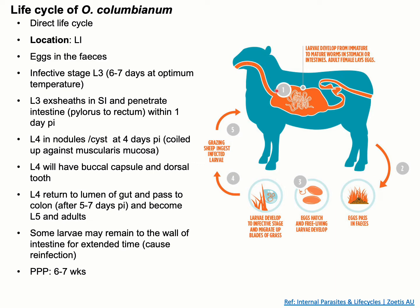When the ingested grass reaches the small intestine, the L3 larvae exsheath and penetrate the wall of the intestine. They migrate within the intestinal wall, and as a result there is an inflammatory response, which finally leads to the development of nodules in the wall of the intestine.